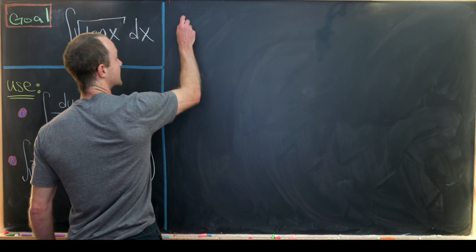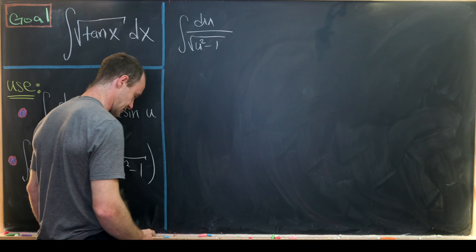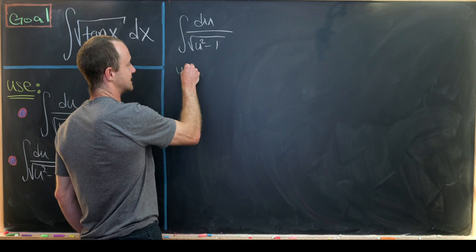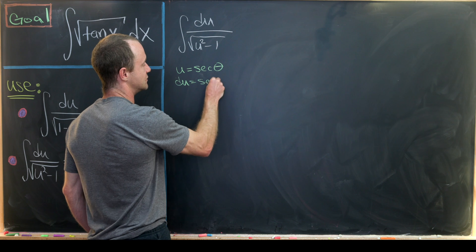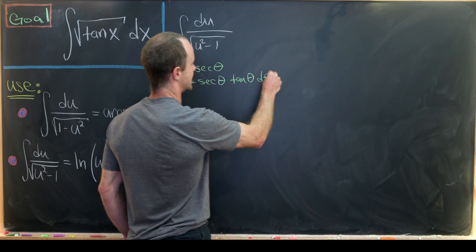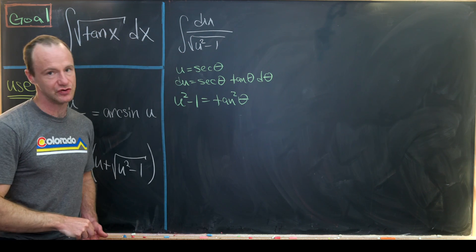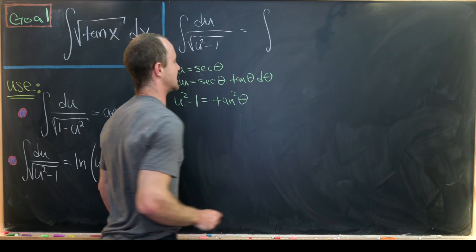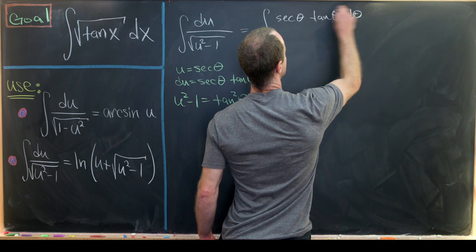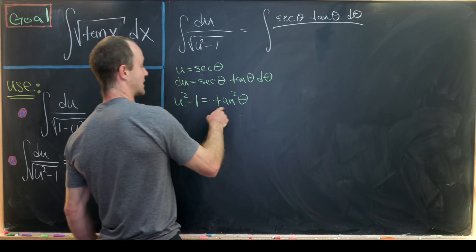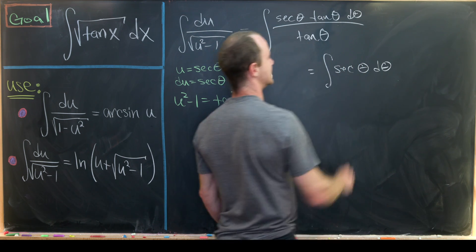Let's derive that second identity. We have the integral of du over √(u² - 1). That motivates a trigonometric substitution: let u = sec θ, so du = sec θ · tan θ dθ. Then u² - 1 = tan² θ by a trig identity. Substituting, we get sec θ · tan θ dθ in the numerator, and √(tan² θ) = tan θ in the denominator. So we need the antiderivative of sec θ dθ.